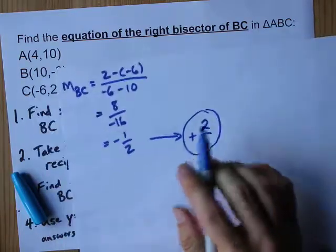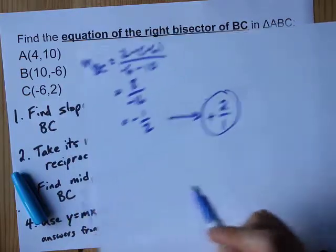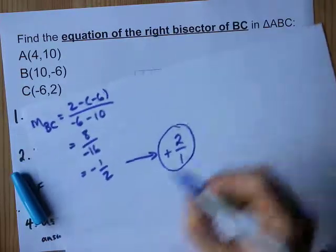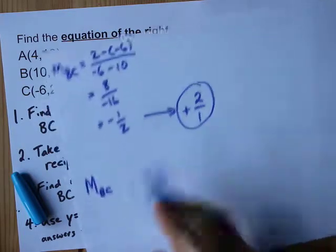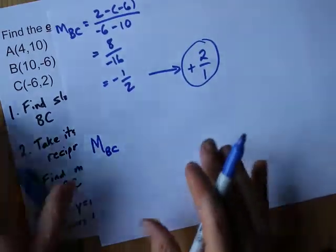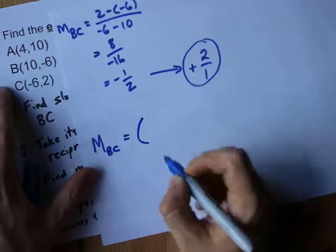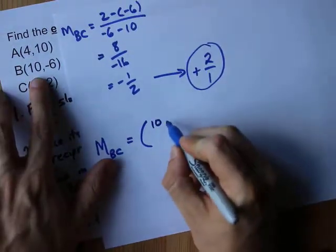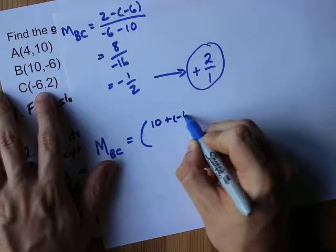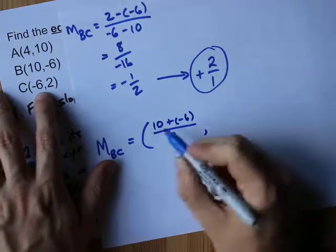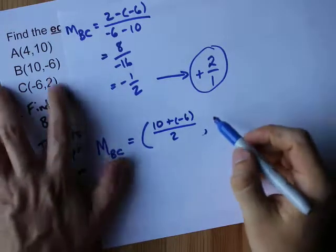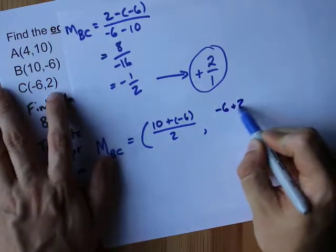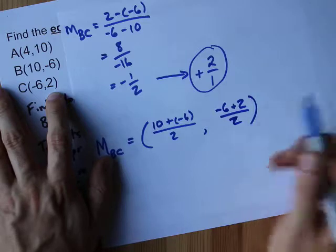Now what we also need is the midpoint of BC. There's a formula for that as well. The midpoint of BC, note that I'm using capital M for midpoint, is the average of the x's and the y's. The x's are 10 and negative 6. Add them together and divide by 2 to find average. The average of the y's is negative 6 plus 2 all divided by 2. Great. That's 2 comma negative 2.